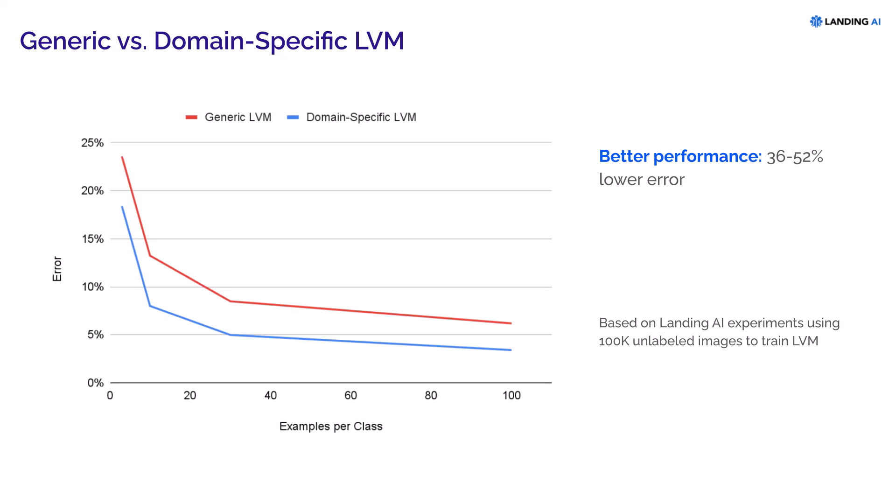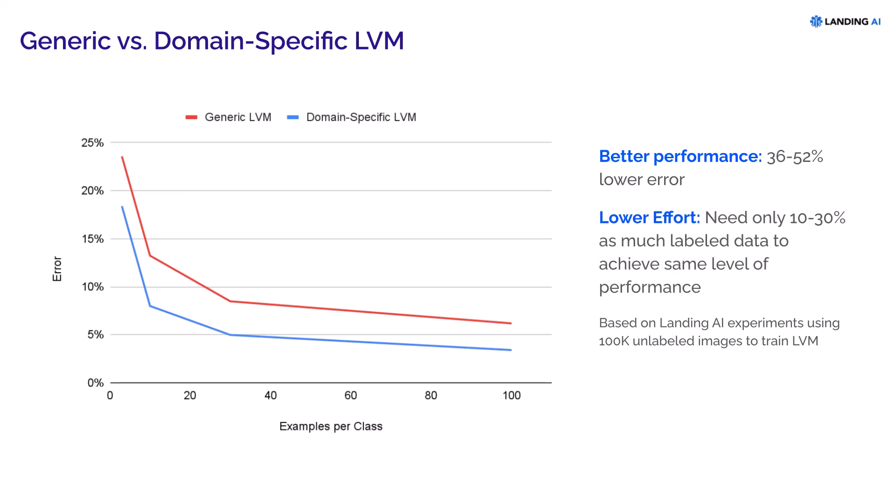In our experiments, domain-specific LVMs need only 10 to 30% as much labeled data as generic LVMs to achieve comparable performance. We've found that it's possible to get a domain-specific LVM working using as few as 100,000 unlabeled images, though performance could be even better with even larger datasets. So if you have a large proprietary set of images that look different from internet images, LVMs might offer a way to unlock considerable value from your data. Feel free to visit us at landing.ai to learn more.